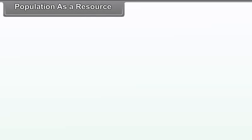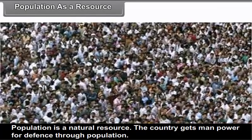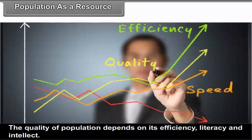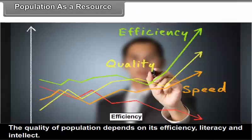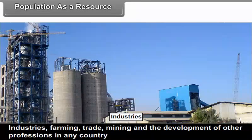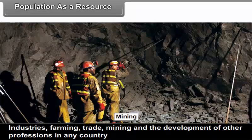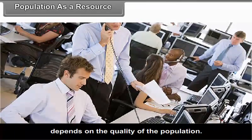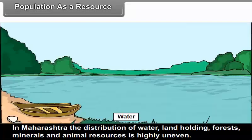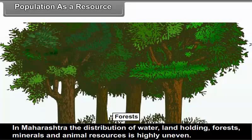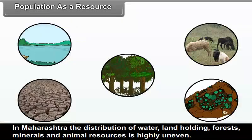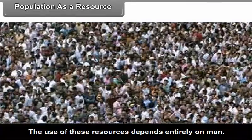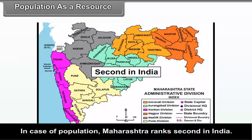Population is a natural resource. The country gets manpower for defense through population. The quality of population depends on its efficiency, literacy, and intellect. Industries, farming, trade, mining, and the development of other professions in any country depend on the quality of the population. In Maharashtra, the distribution of water, land holdings, forests, minerals, and animal resources is highly uneven, and the use of these resources depends entirely on man.